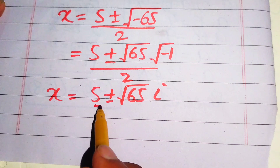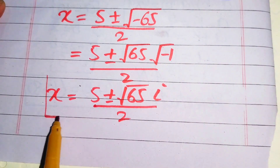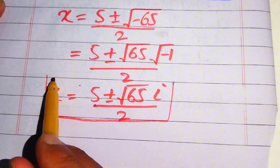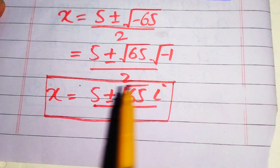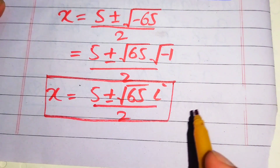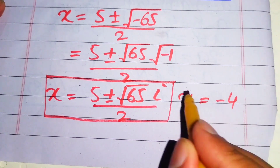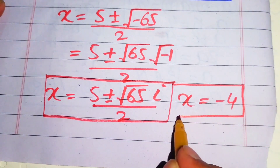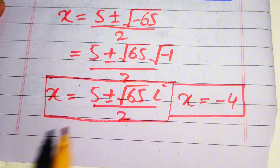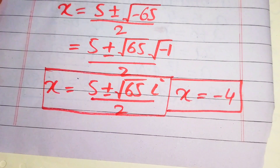Finally, we have x equals 5 plus or minus square root of 65 times iota, divided by 2. These are the two complex roots of the given equation. We have only one real root, which is x equals minus 4. These are the three roots of the given equation and this is the final answer. Thank you so much for watching this video, please subscribe to my channel for more exciting videos.